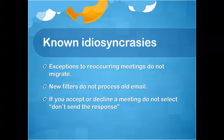The next one is new filters do not process old email. Once you set up an email filter inside Office 365, it will not process old email natively — you have to go through a couple of options to run the filters for old email. Also, if you accept or decline a meeting, do not select 'do not send the response.' What this does is cause issues with the meeting — it doesn't record whether you are going, not going, or tentative. It moves the message into your trash, and if your trash is ever emptied, it will remove that meeting from your calendar.